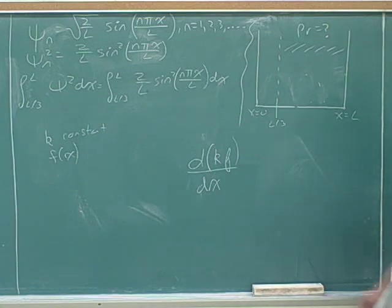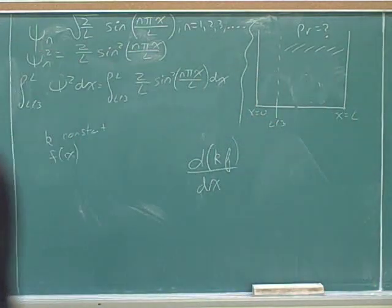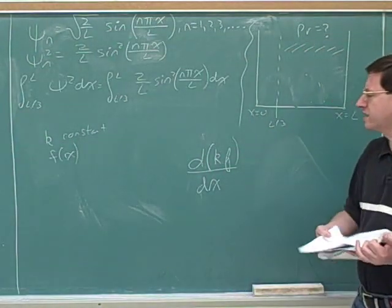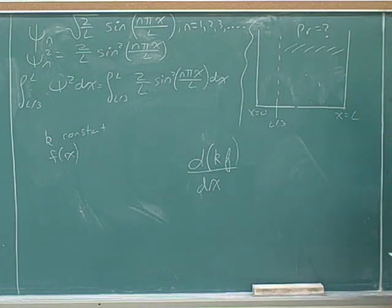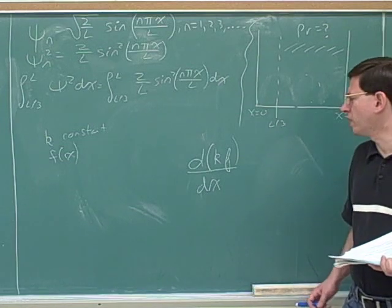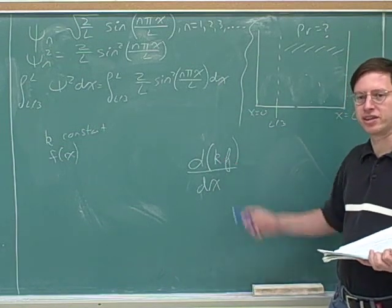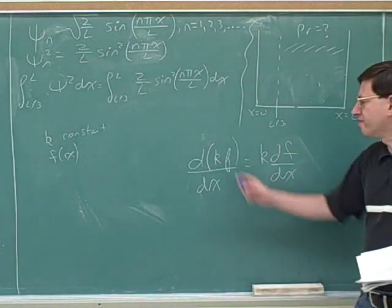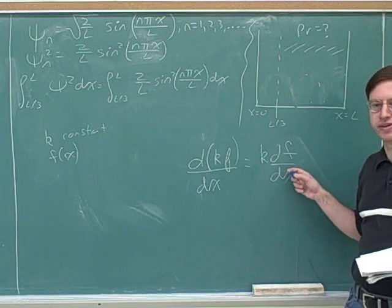Let's say k is a constant and f is a function of x. Do you remember how we can simplify this derivative? The derivative of k times f with respect to x, how did we talk about last time that we can simplify that derivative? The derivative of a constant times a function is just the constant times the derivative of the function.